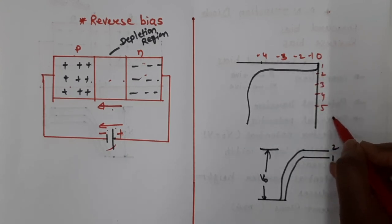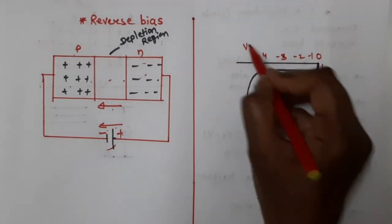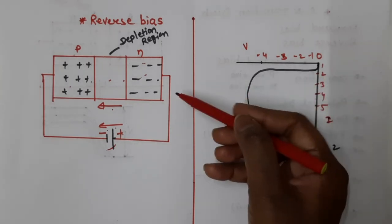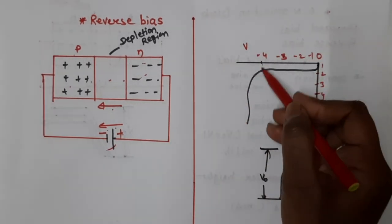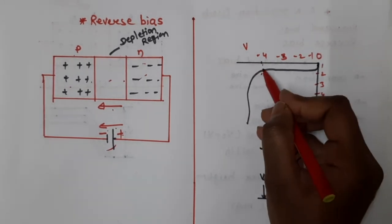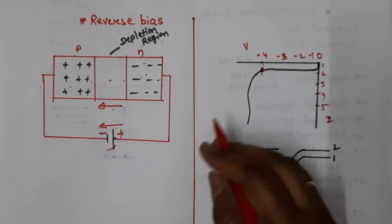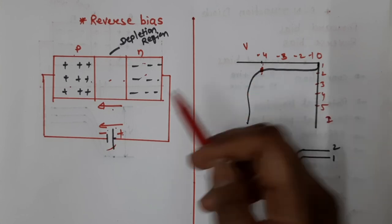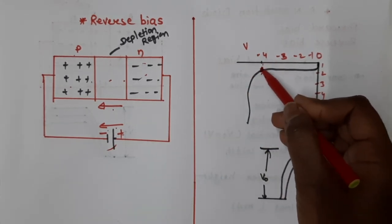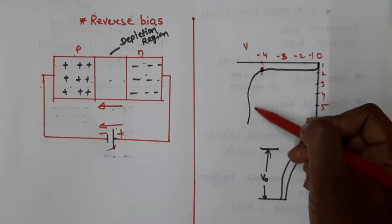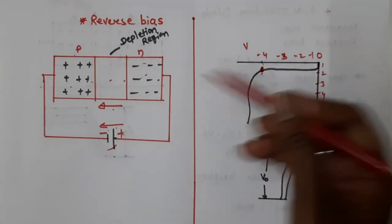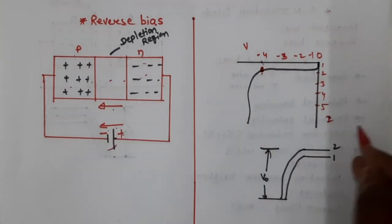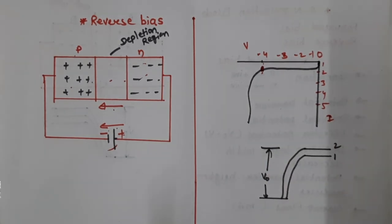The graph of voltage versus current in reverse biasing: at voltage zero, there is no current. As voltage increases, initially no current flows, but at a certain point current suddenly becomes extremely high. This point is called the breakdown voltage. It is called breakdown voltage because current suddenly breaks through — initially current is zero, then suddenly current starts flowing. This is the breakdown voltage, and that is how the reverse biasing graph is plotted.